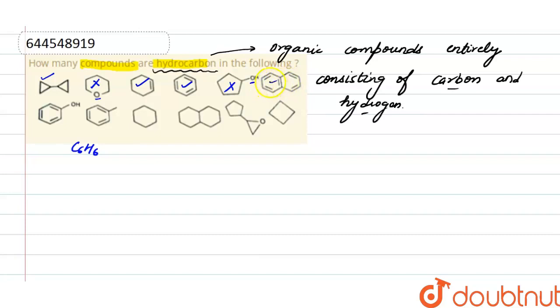In next compound, we have two benzene rings connected to each other, so this whole compound is a hydrocarbon. In next compound oxygen is present in the compound, so this is not a hydrocarbon.